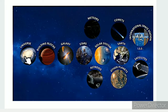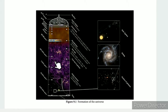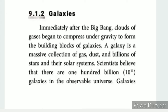Part 1 covers the universe and its building blocks: galaxies and stars. Immediately after the big bang, clouds of gases began to compress under gravity to form the building blocks of galaxies.